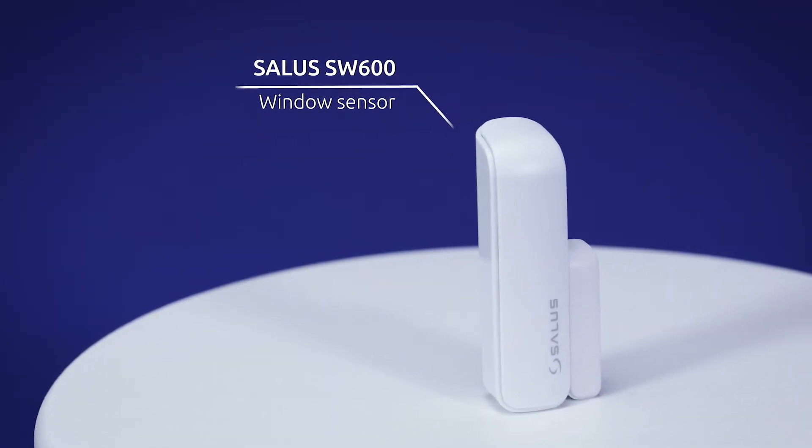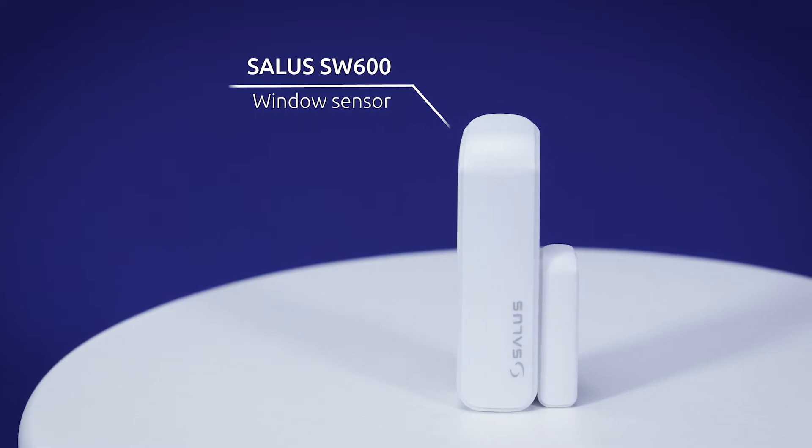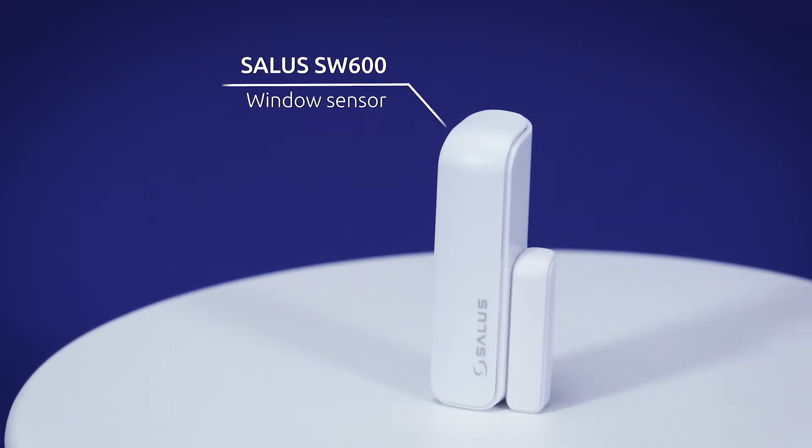The SW600 is a slim sensor that is used to detect the opening of doors and windows inside your smart home.